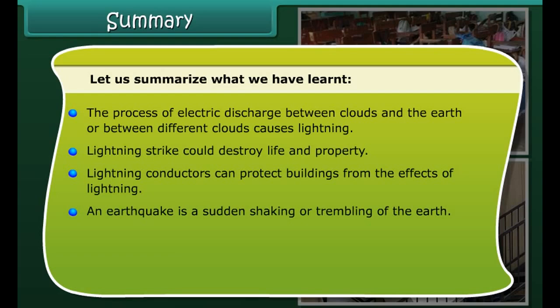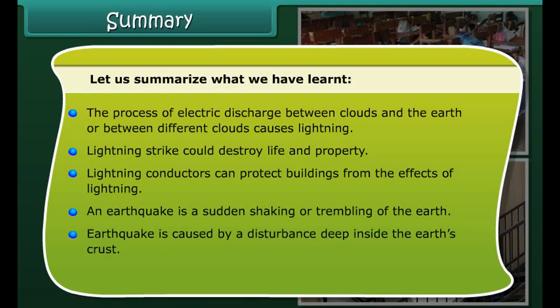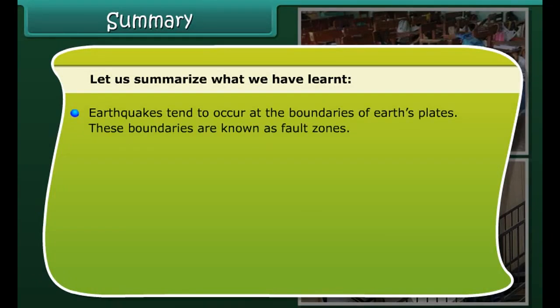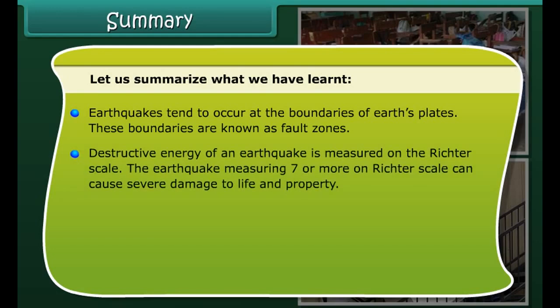Earthquakes: the earth is divided into three main layers — a hard outer crust, a soft middle layer, and a center core. The outer crust is broken into massive irregular pieces called plates. These plates move slowly, driven by energy forces deep within the earth. Earthquakes occur when these moving plates grind and scrape against each other.